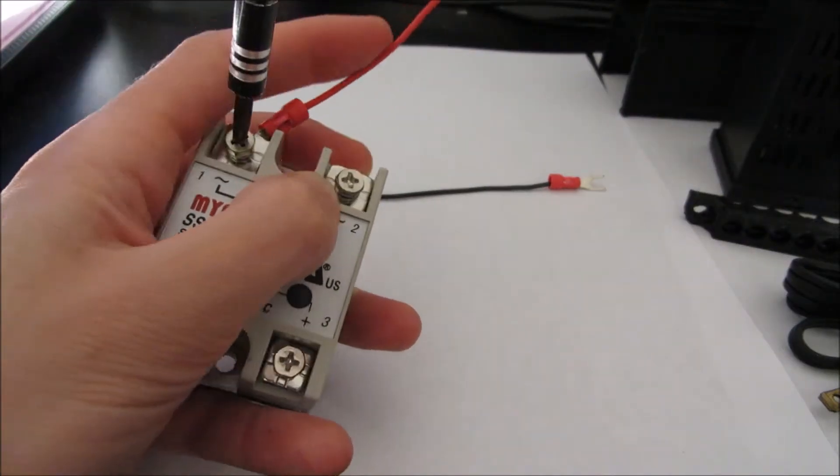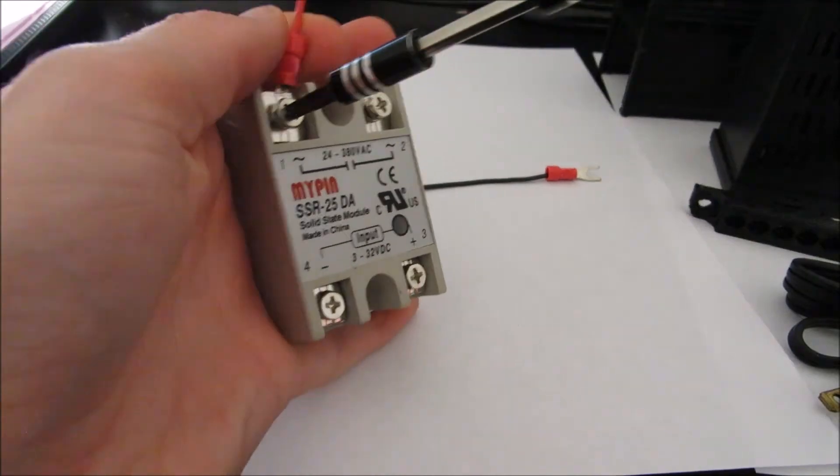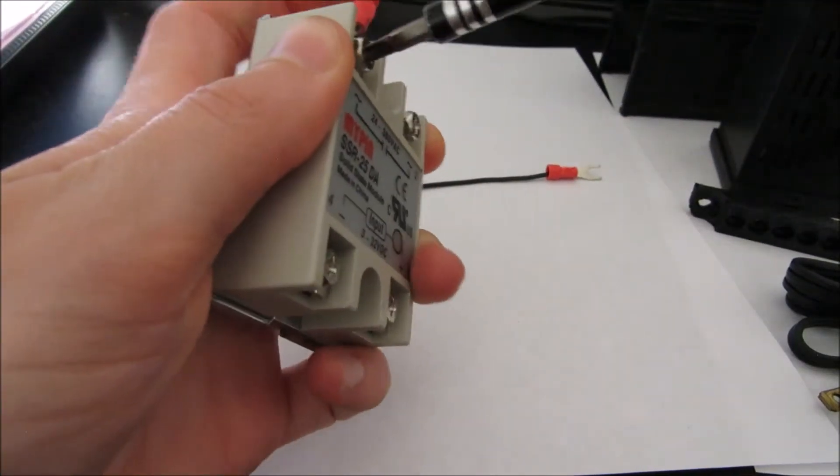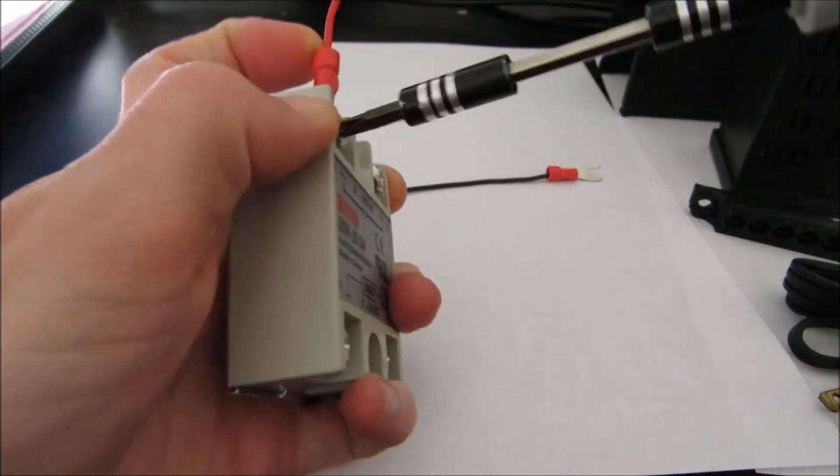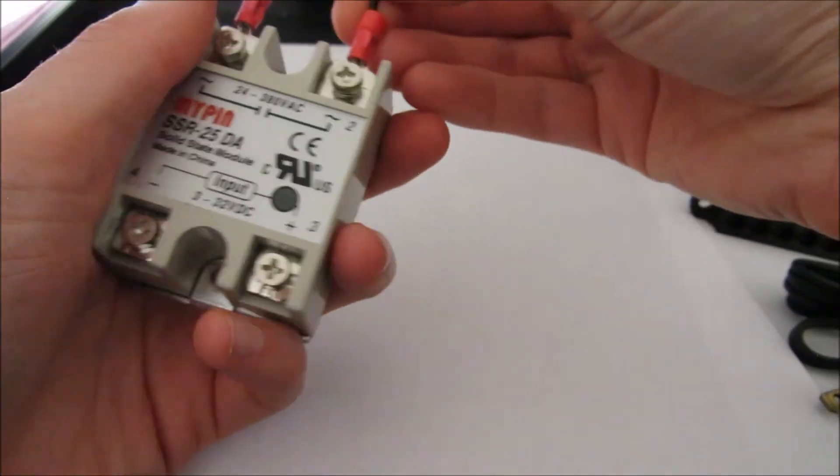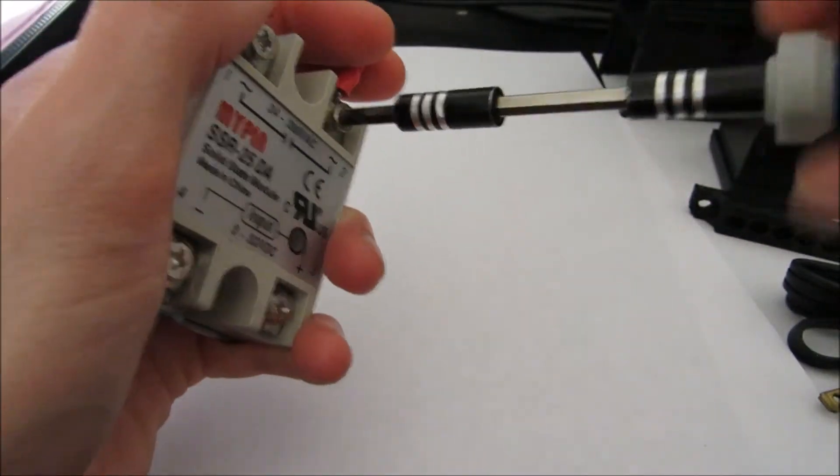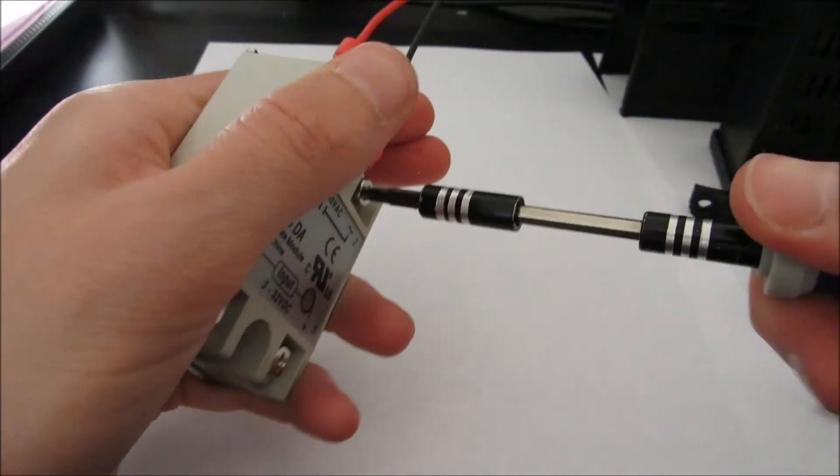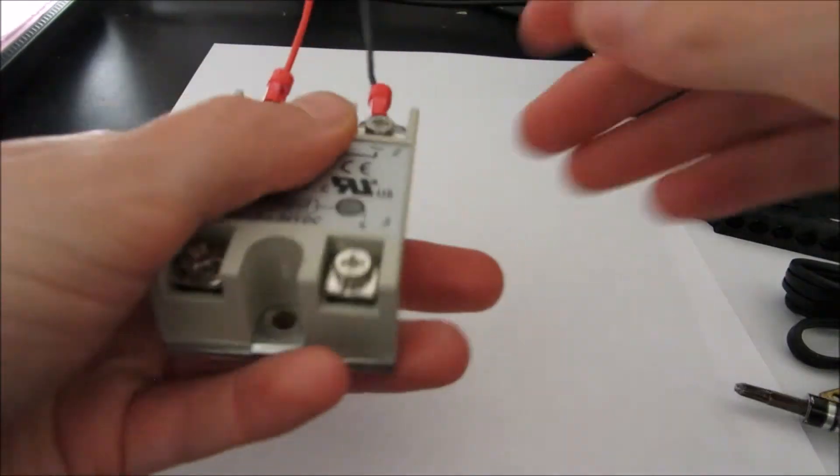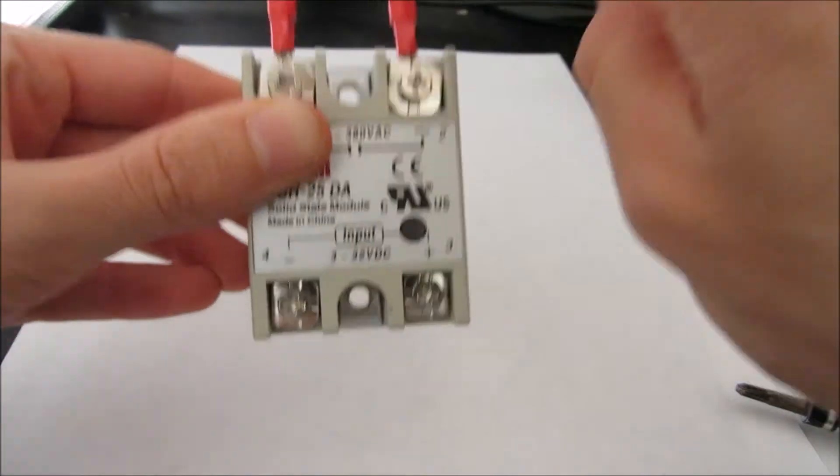And line that up and tighten that down. And same with the black, we'll then go on number two. Screw that in. So those should be tight. You shouldn't be able to move them.